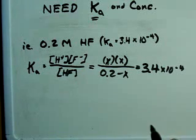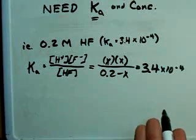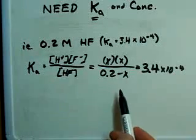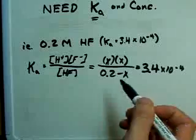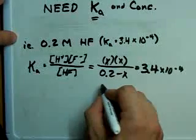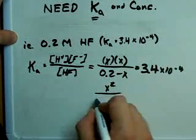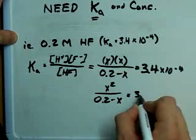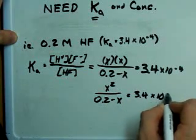If you want, you can make mathematical assumptions, as your teacher may have showed you, or you can just use the quadratic formula to solve this. The quadratic formula will always work. In this case, what we're left with is X squared over 0.2 minus X equals this Ka, 3.4 times 10 to the minus 4.